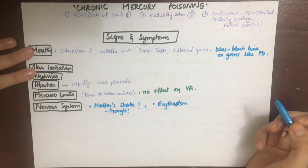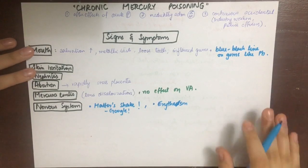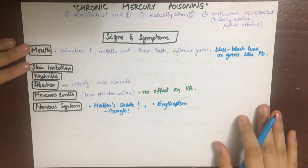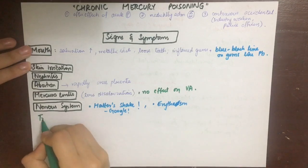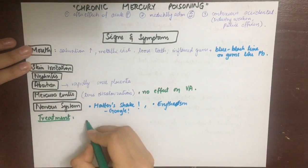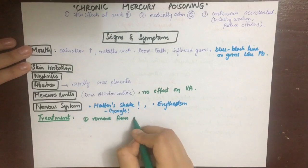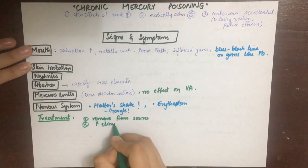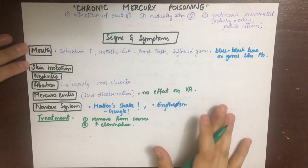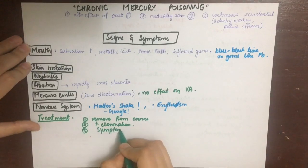The treatment of chronic mercury poisoning involves first removing the patient from the source, then increasing the elimination of mercury already deposited through the bowel and kidneys. The rest of the treatment is symptomatic.